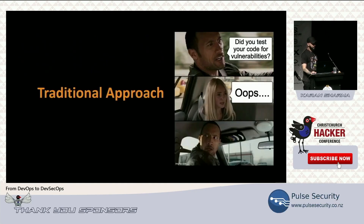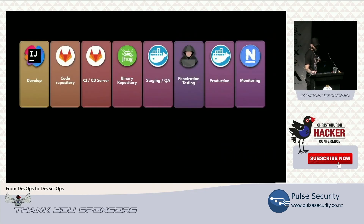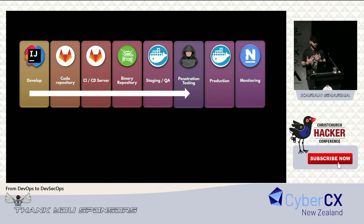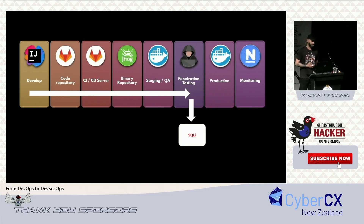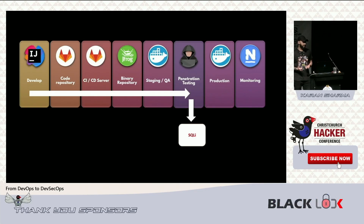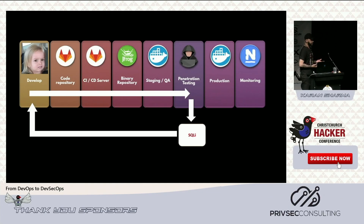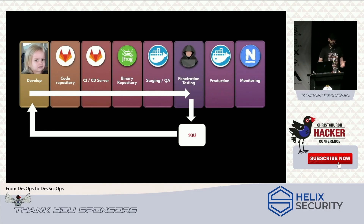In the traditional approach, you develop a product, bring in a third party for pen testing before go-live, and they find a SQL injection vulnerability. Since the application is critical, you need to fix it before going live — so you go back to developers, they have to drop what they're working on, and you probably won't meet your go-live date.